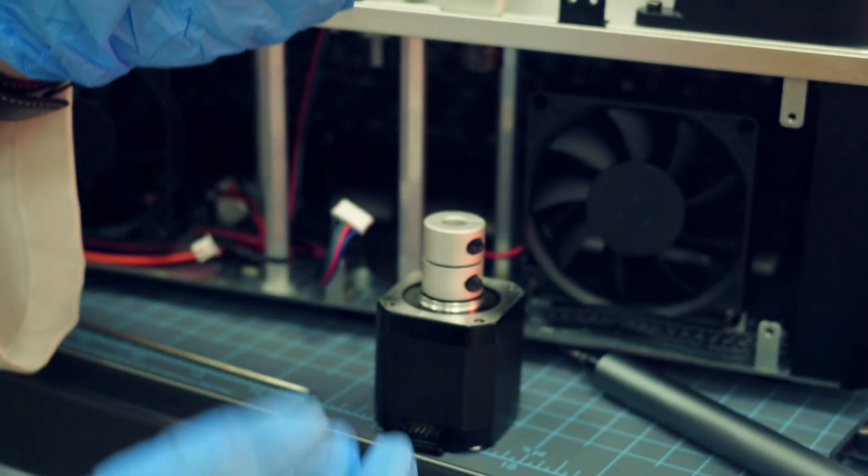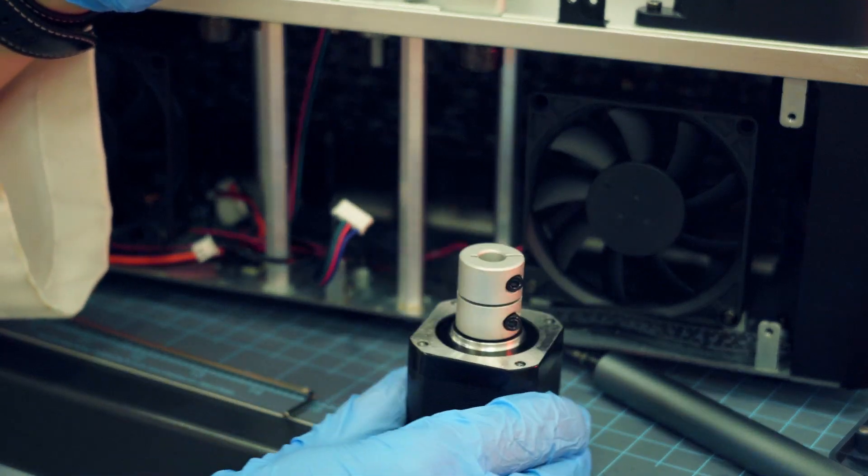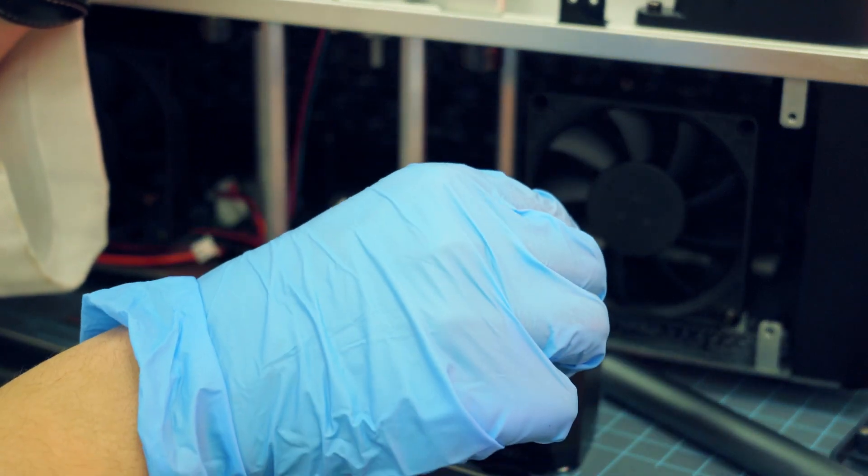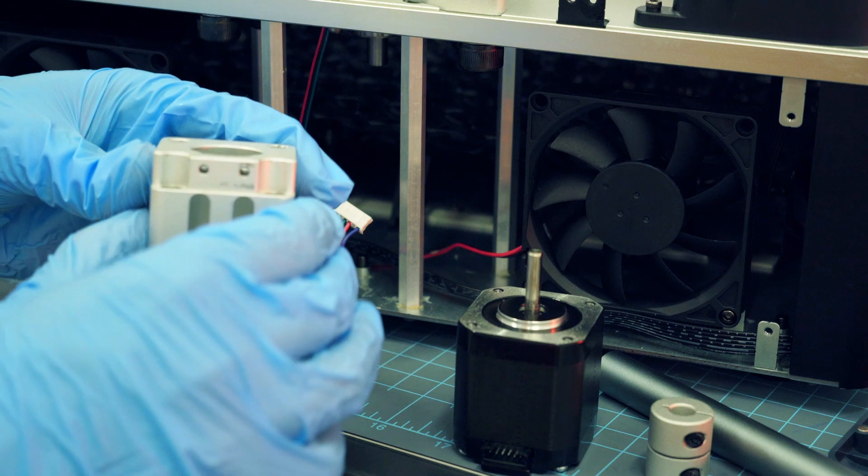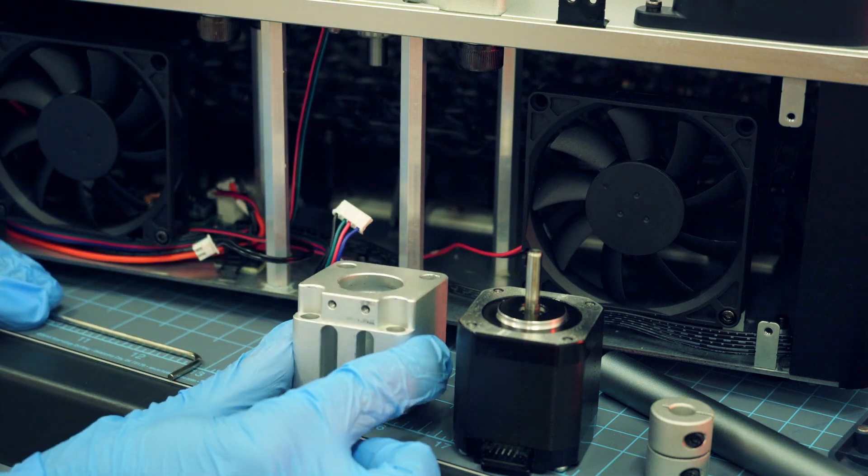You see we have our block now separated from our motor. We do have this little bit on the top here which also just slides right off. We'll set that aside for now. We now have these three separate pieces.